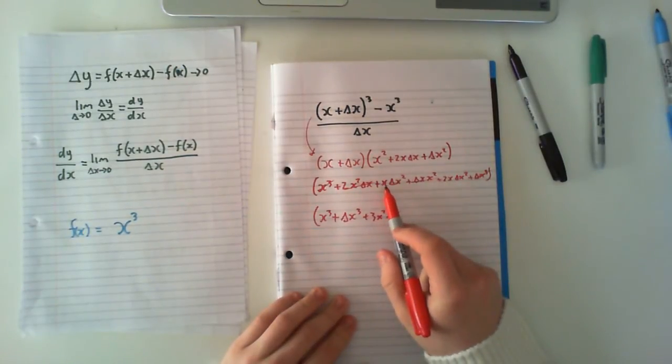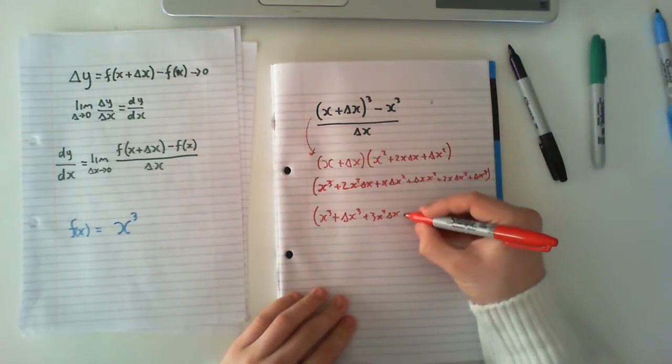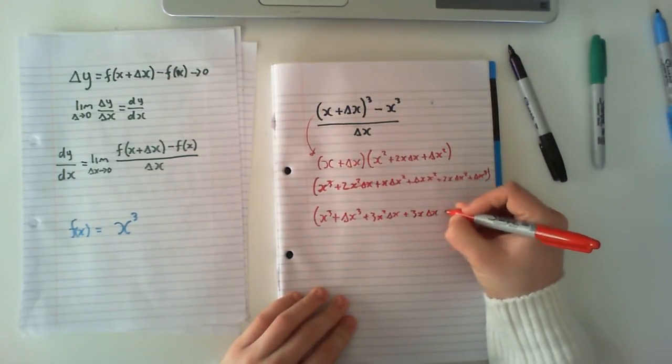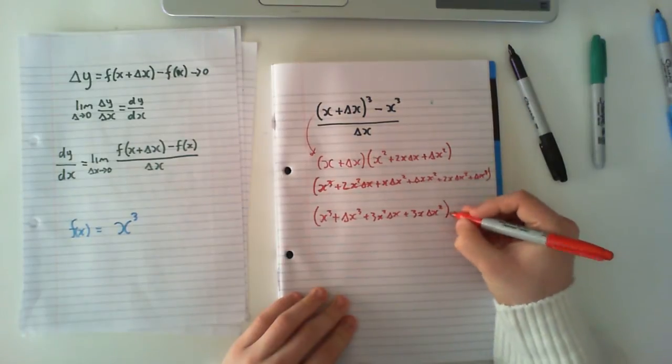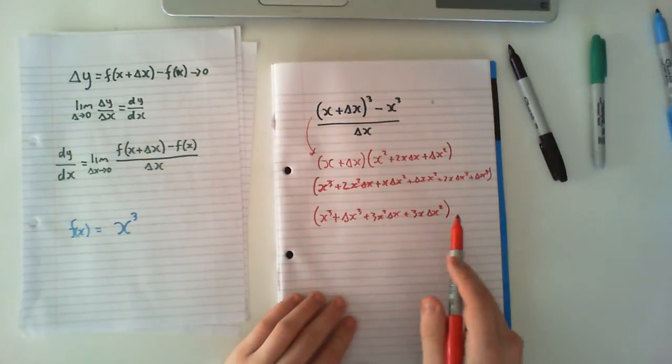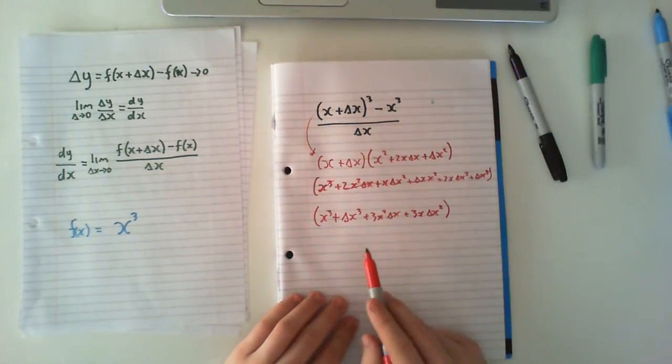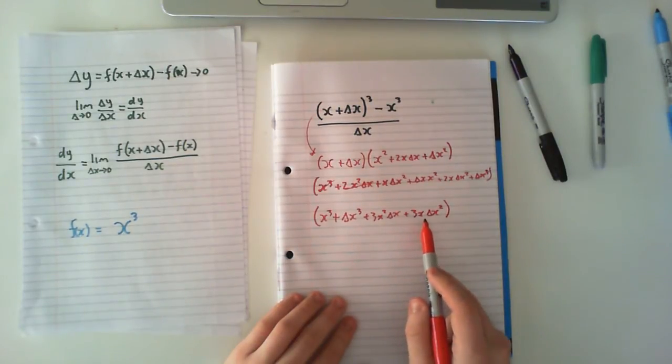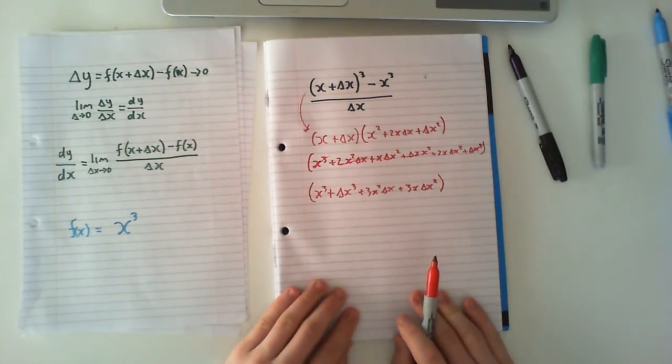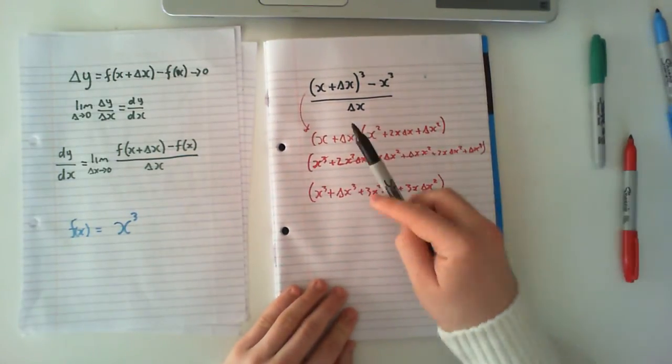And then we have an x with a delta x squared, 3 times as well, so plus 3x delta x squared. You can see how that works then. Each of the two are cubed and we have three lots of each where we've got a squared and a single, and a squared and a single with the two things in your bracket. So if you didn't know how to multiply them out, that's how we do it.